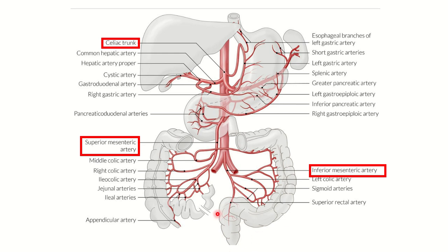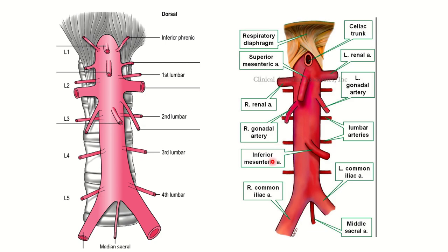The inferior mesenteric artery supplies the rest of the gastrointestinal tract. So it is clear that the celiac trunk, superior mesenteric artery, and inferior mesenteric artery together provide blood supply to the whole of the gastrointestinal system.